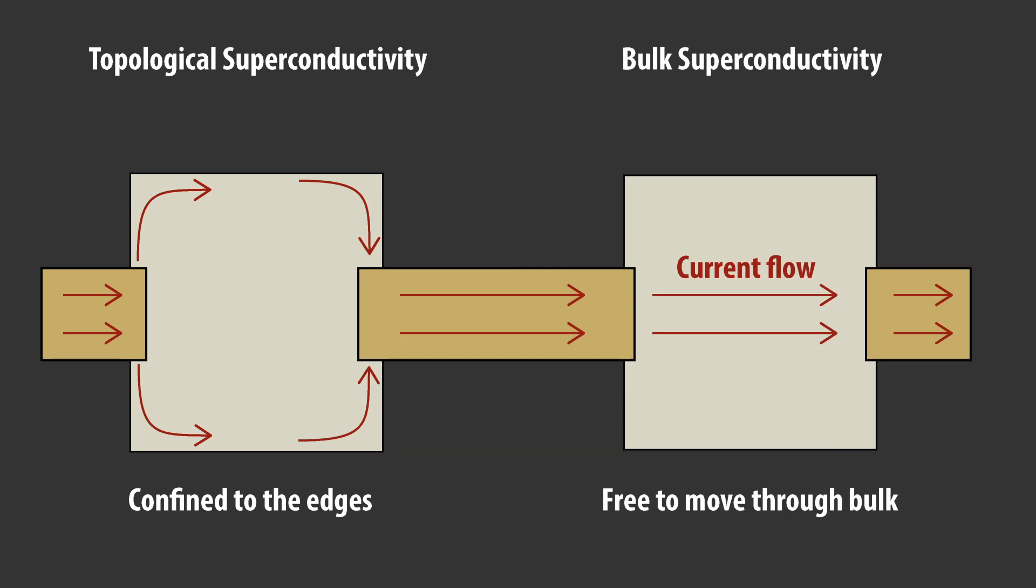Typically, superconductivity is a bulk property of a material. That is, the superconductivity exists throughout the material. However, there is another variant of superconductivity, which is topological.